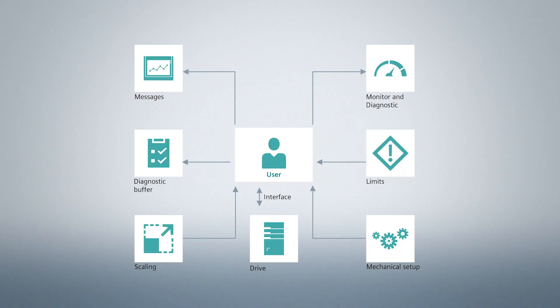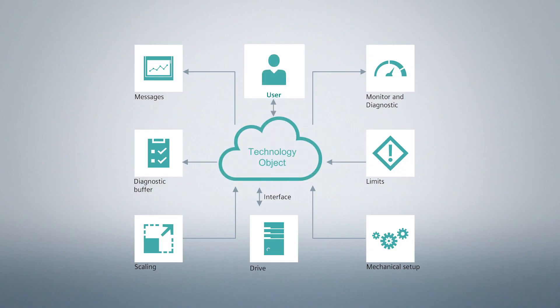Today, the user only programs the movement to be executed. The rest is done by the technology object. The movement is programmed on the basis of standardized function blocks according to PLCopen and can be used by any motion programmer. Motion control has never been so easy. Siemens.